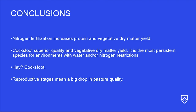Our conclusions are that nitrogen fertilization increases protein and vegetative dry matter yield. Cocksfoot showed superior quality and vegetative dry matter and is the most persistent species in environments with water and nitrogen restrictions. This experiment was conducted at Ashley Dene Research Station in Lincoln. If a farmer wants hay, cocksfoot would be the most recommended species, and reaching reproductive stages means a big drop in pasture quality. For the whole year, we draw the same conclusions — cocksfoot maintained very high quality in this production environment.